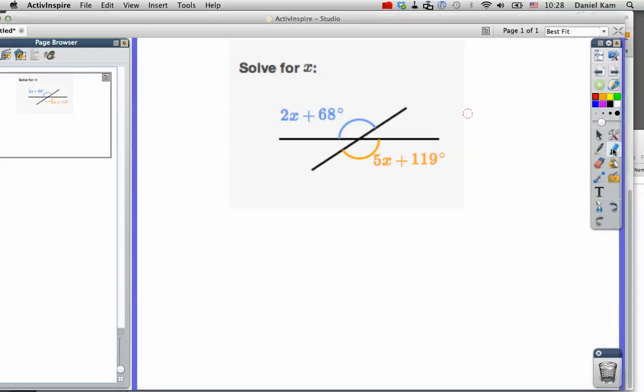All right, today we're going to talk about how to solve vertical angles using algebra. So for instance, when two lines intersect, here's one line, and here's the other line. At their point of intersection, intersection is where they cross right here.